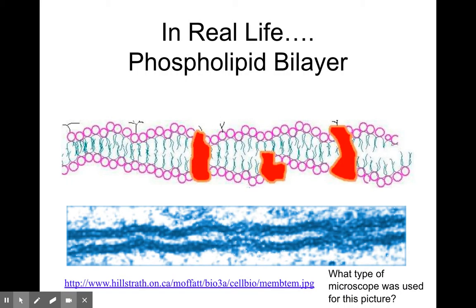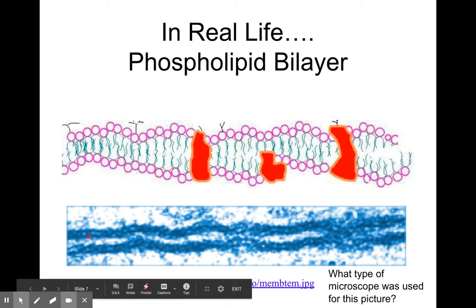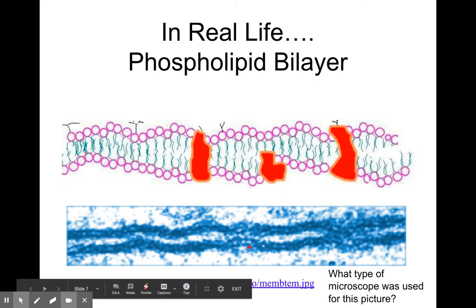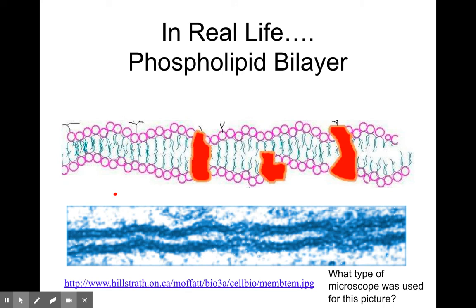I always like seeing real pictures of the structure. Here's an artist's rendition — you can see the red proteins embedded in there, and here you can see how it's a bilayer. Here are the phospholipid heads, and you can't really make out the tails in the center, but you can see the kind of blank space there. What type of microscope do you think did that? If you said transmission electron microscope, you were correct — TEM. I took that picture of that cell membrane.